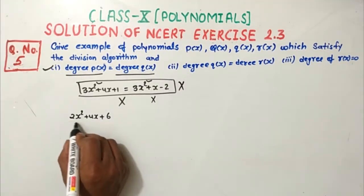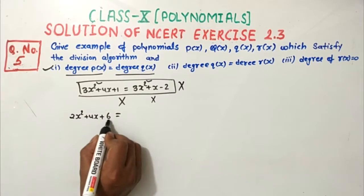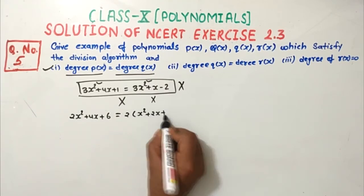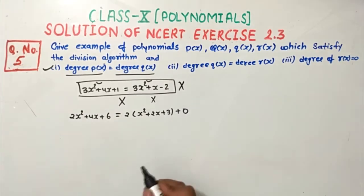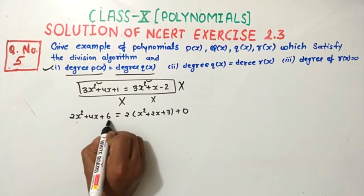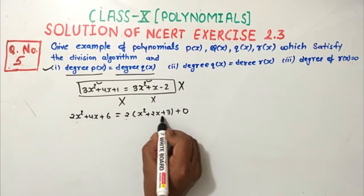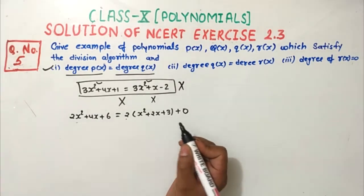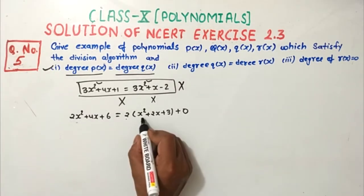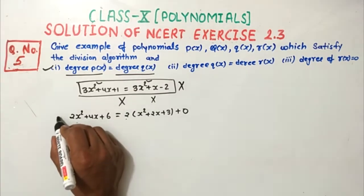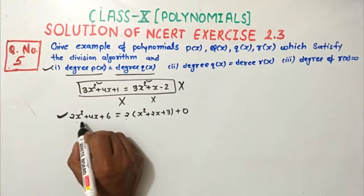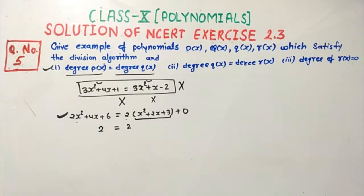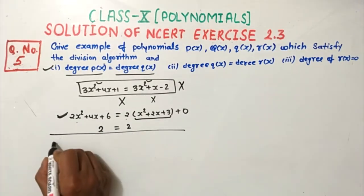Suppose p(x) = 2x³ + 4x² + 6x. If we take 2 as common factor, this becomes 2 times (x² + 2x + 3) plus 0. So the remainder is 0, divisor is 2, and quotient is x² + 2x + 3. Here degree of p(x) is 2 and degree of q(x) is also 2, so degree of p(x) equals degree of q(x), and this also satisfies the division algorithm.